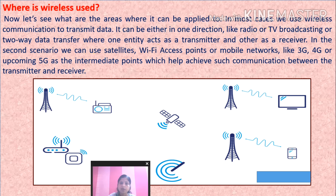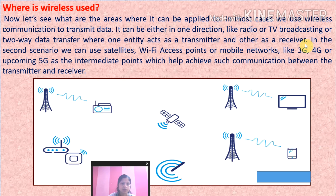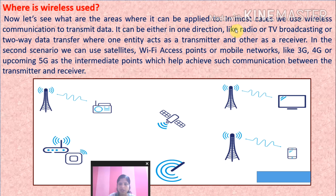Radio or TV broadcasting is one-way communication. Two-way data transmission is like mobile or the internet, where sometimes you are sending and sometimes you are receiving. For two-way connections between sender and receiver, we can use satellites, Wi-Fi access points, or mobile networks like 3G, 4G, or upcoming 5G.